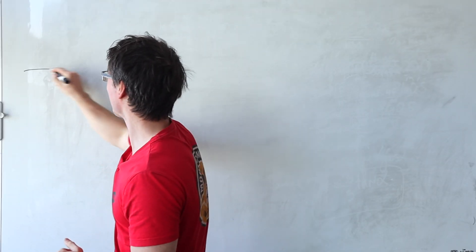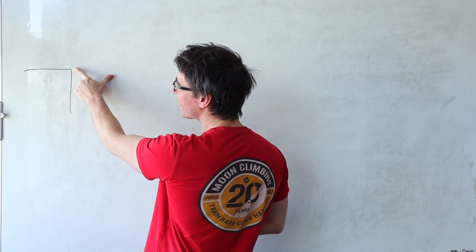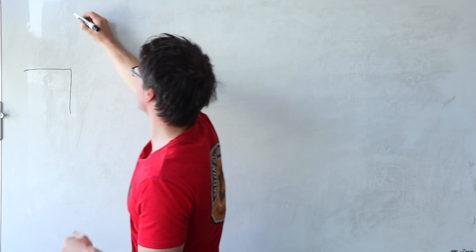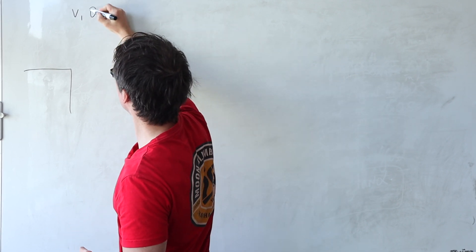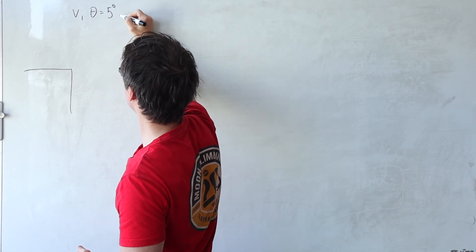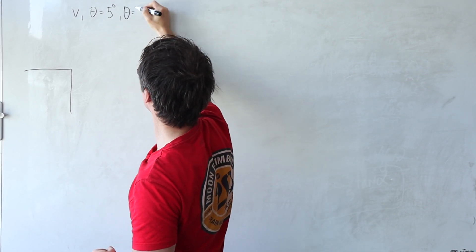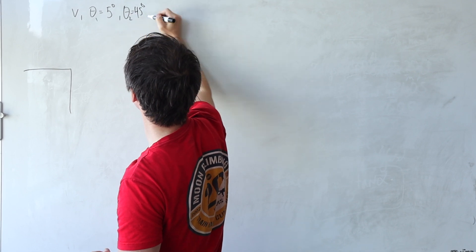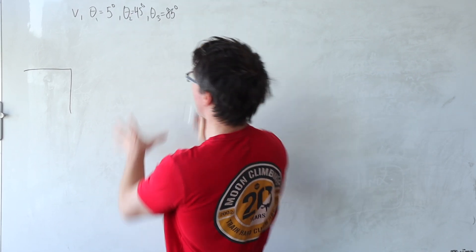Let's solve an Oxford physics problem. We have a cliff and we launch a projectile at three different angles at speed v: first at five degrees from the horizontal, then at 45 degrees, and finally at 85 degrees.